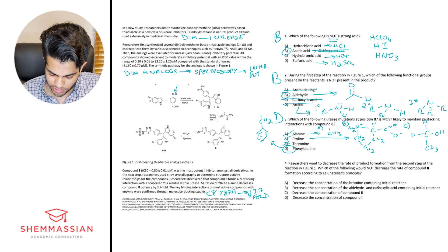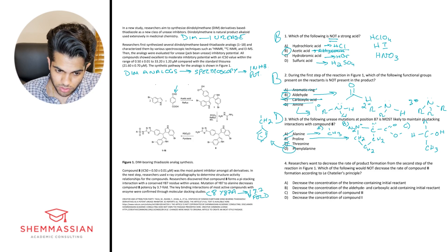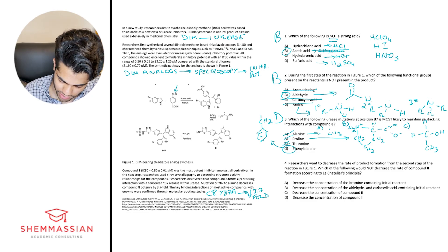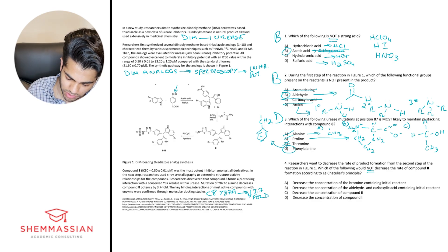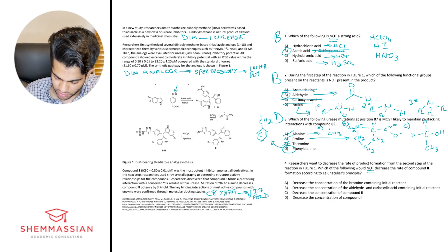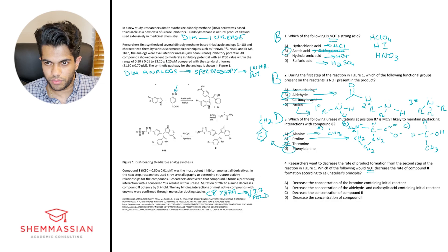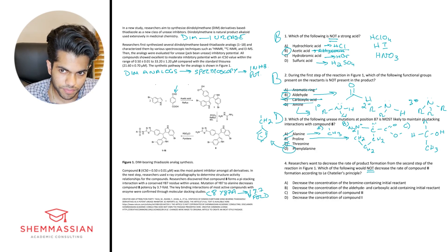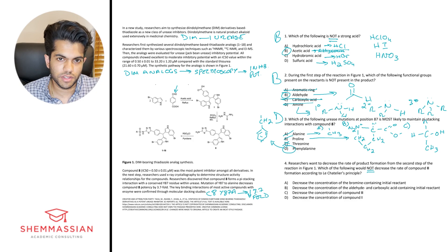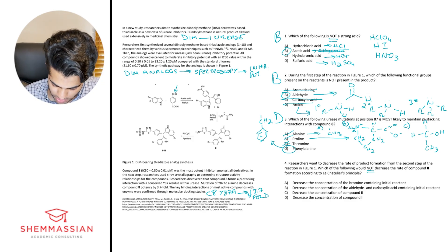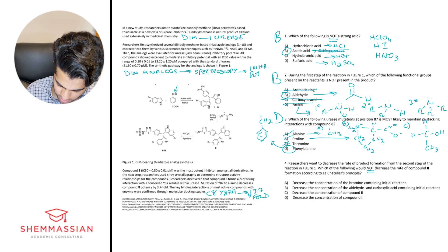Alrighty, let's go over the last question. Researchers want to decrease the rate of product formation from the second step of the reaction figure one, which the following would again, not decrease. Let's go ahead and underline that or highlight it, would not decrease the rate of compound two formation according to Le Chatelier's principle. Alright, so Le Chatelier's principle is just basically this idea where when a stress is placed on a reaction, it's gonna shift in a way to alleviate that stress.